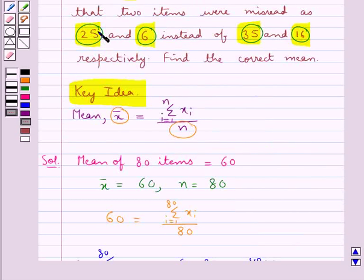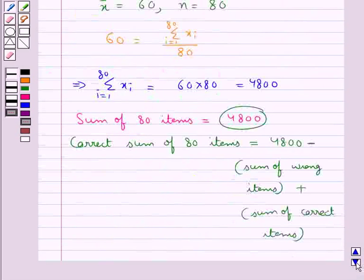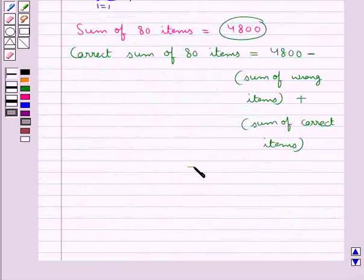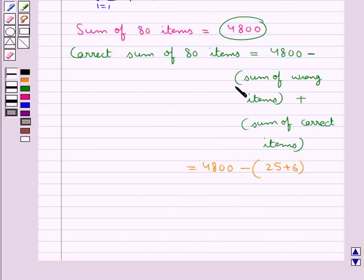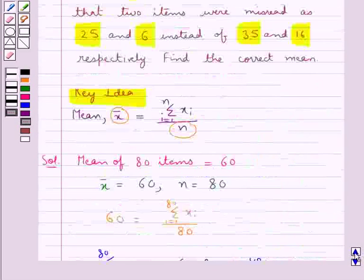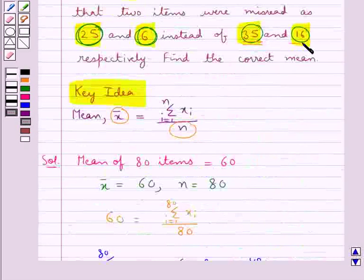The wrong items are 25 and 6, and the correct items are 35 and 16. So this equals 4800 - (25 + 6) + (35 + 16).